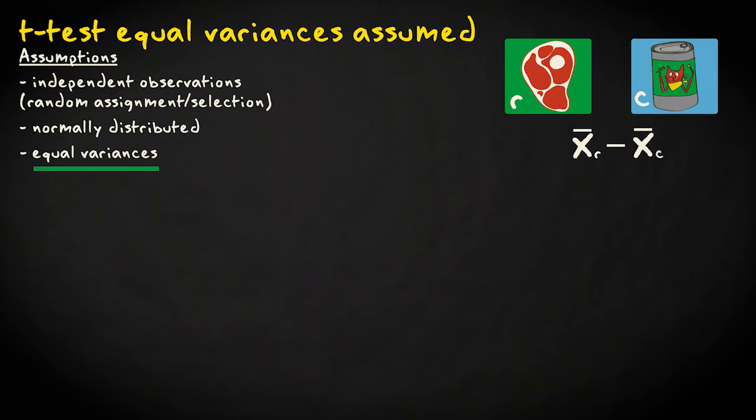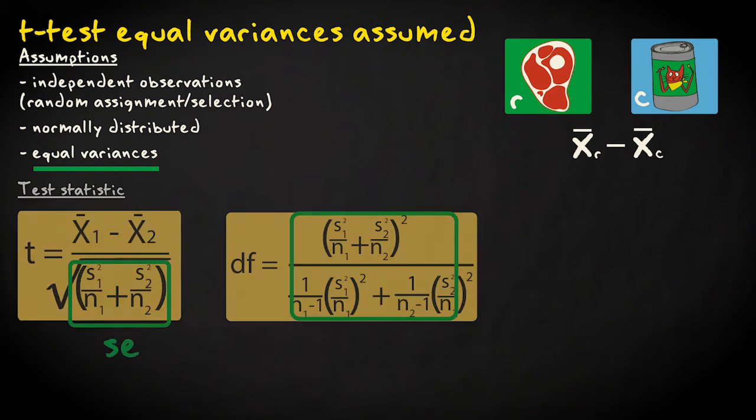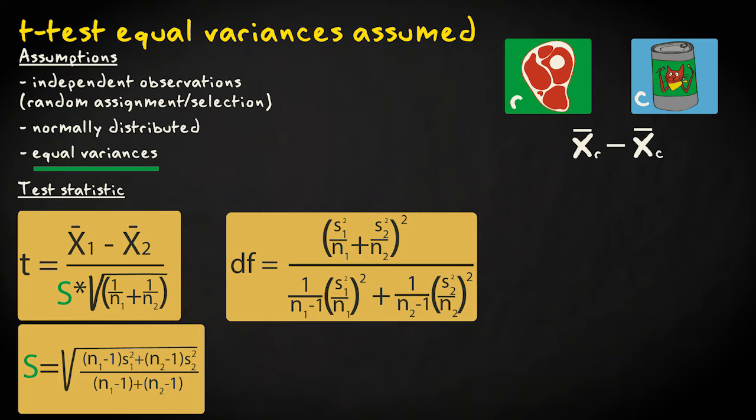There's an alternative version of the t-test for independent means that adds the assumption that the variances in the populations are the same. If we're willing to make this assumption, the standard error and degrees of freedom are calculated differently. The standard error is calculated by taking the pooled standard deviation times the square root of the sum of the reciprocals of the sample sizes. You can think of the pooled standard deviation as the weighted average of the two standard deviations for each sample.